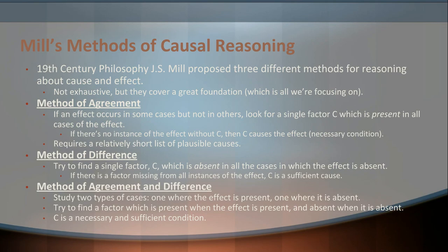With that word of warning in mind, let's look at a handful of methods of actually doing causal reasoning. These are based off the work of 19th century philosopher John Stuart Mill — the same guy well known for utilitarianism in ethics. Mill proposed three different methods for reasoning about cause and effect. They're not exhaustive and not complicated, but they serve as a great foundation for identifying when one thing causes another, and being clear about them helps us recognize bad causal arguments out in the world.